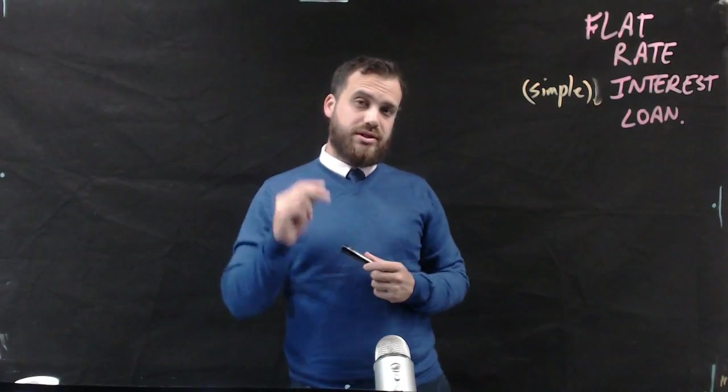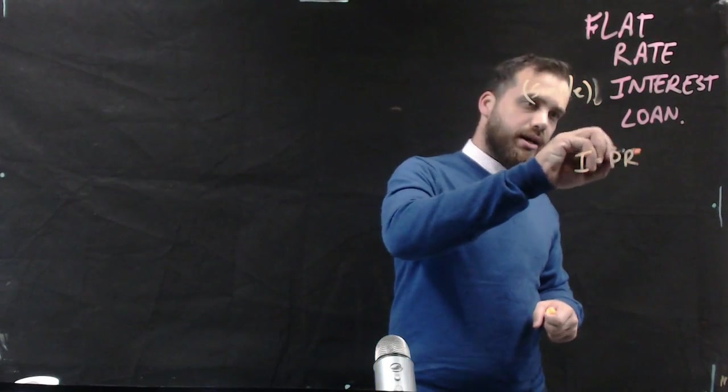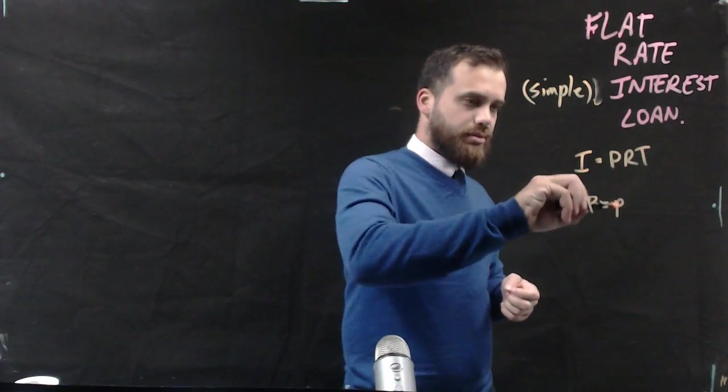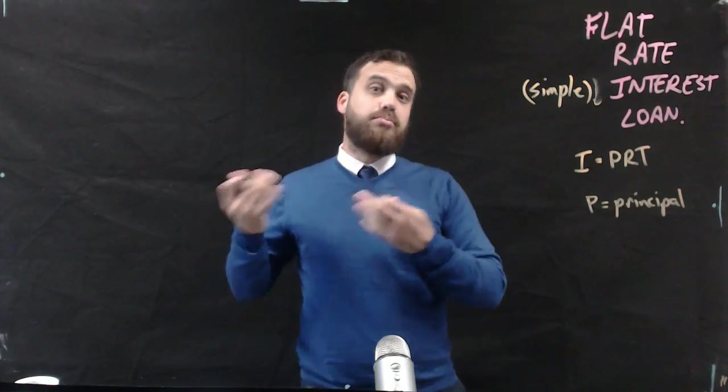You'll remember that the formula for simple interest is I equals PRT where P is the principal. That's the money that you start with. In this case it's a loan so it's the money that you borrow.